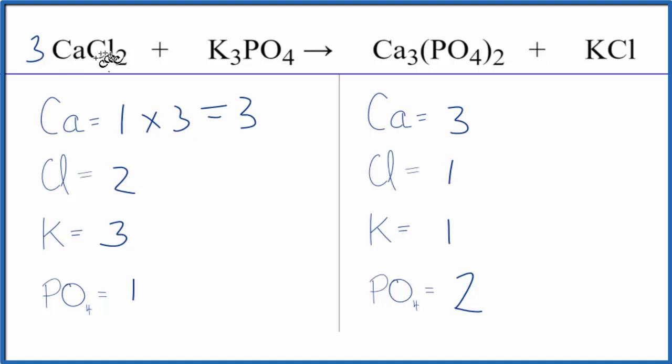And then for the chlorines, this two times three here, that would give us six. We could just balance the chlorine atoms too. We could put a six here. So we have one chlorine times six. Those are balanced.